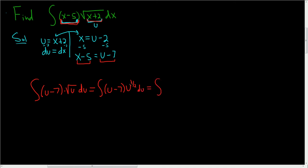So u to the 1 half times u to the first power is u to the 3 halves. 1 plus 1 half is 3 halves. You add the exponents. And then you distribute here, and you get minus 7 u to the 1 half, du.